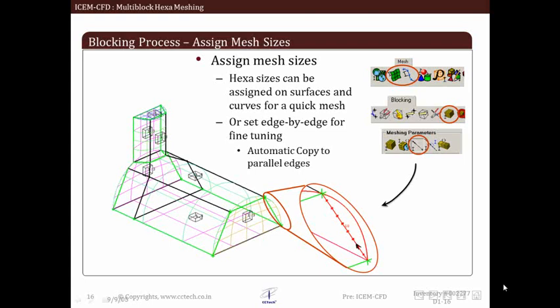Once association is done, we have to preview the mesh. We can set hexa size on surface just to take a quick and crude preview of hexa mesh. For fine tuning of mesh, we can set number of nodes to an individual edge. This is time consuming but results in good quality mesh which can accurately capture physics involved. We will be exploring this option in detail in future slides.